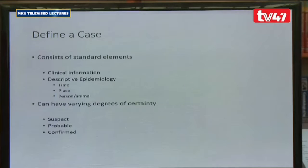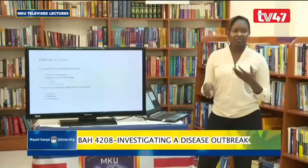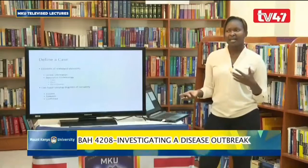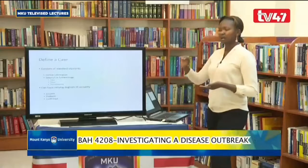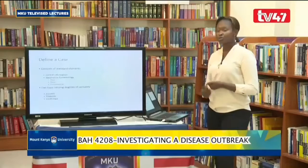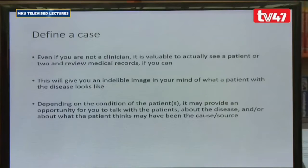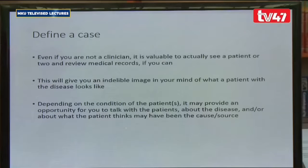For a case to be defined, it requires clinical information. We will see more of this in subsequent slides. You also need to describe the epidemiology — the time when the disease occurred, the place, and the person or animal involved, including age, race, sex, and other details. Even if one is not a clinician, it is important to review medical records and see how cases are presenting, so that when you see other cases, you have an idea of how the disease is showing.